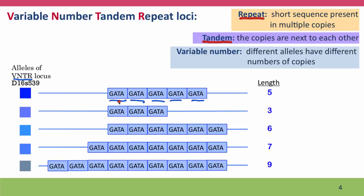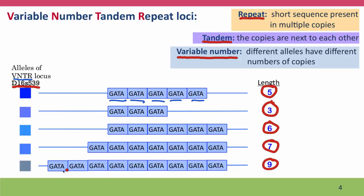They're tandem repeats, meaning the copies are next to each other — they're not scattered around the genome. They're variable number tandem repeats because the number of repeats in each allele differs. So these are different alleles of this particular VNTR locus, and the alleles are characterized by how many copies of the repeat there are. For example, allele 9 of the chromosome has 9 copies of the repeat at this position. VNTR locus D16S539 is a place on the chromosome where some people have 5 copies of G-A-T-A, some have 3, some have 6, or 7, or 9, or other different numbers.